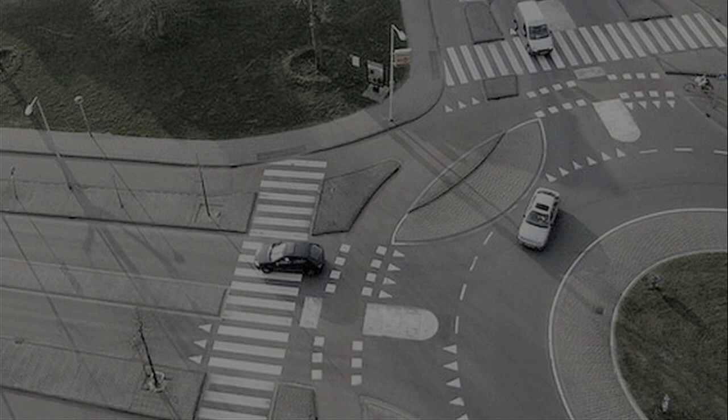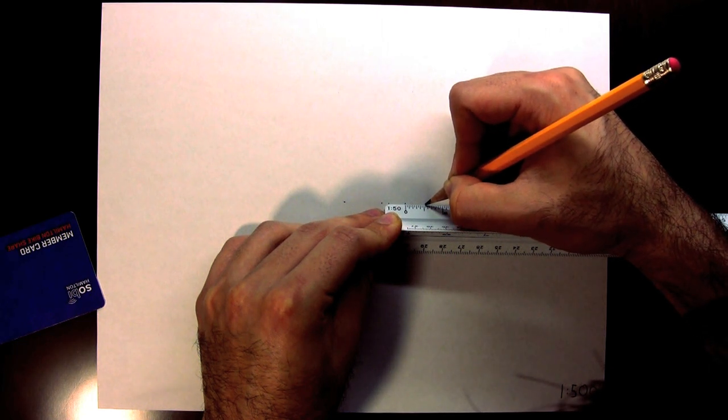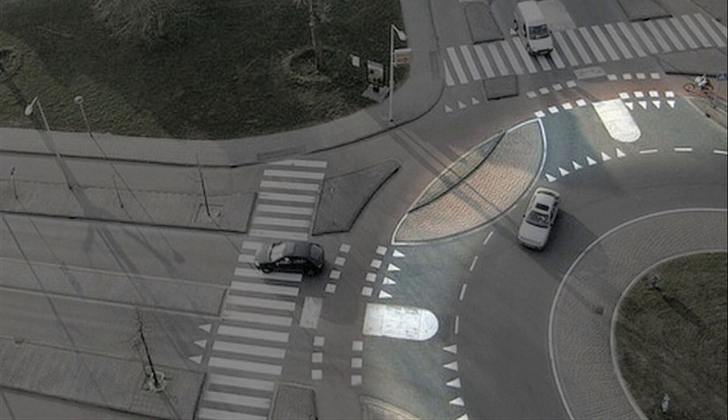Next is the space between the bicycle path and the circular roadway. This should be from 5 to 6 meters wide to provide space for one car. If it were less than 5 meters wide, cars waiting to enter the circular roadway would be blocking the bicycle path, and cars waiting for a gap in bicycle and pedestrian traffic would be blocking the circular roadway.